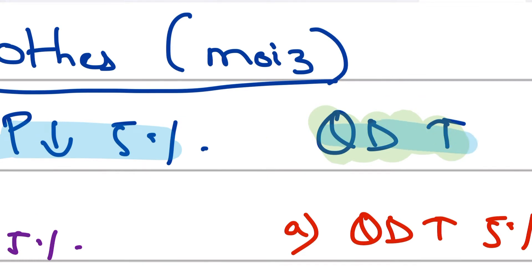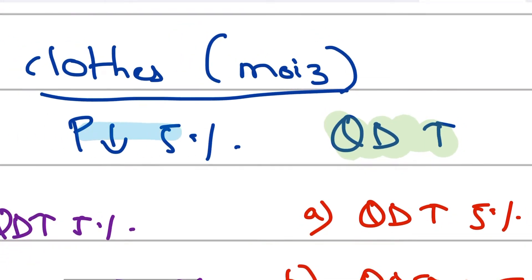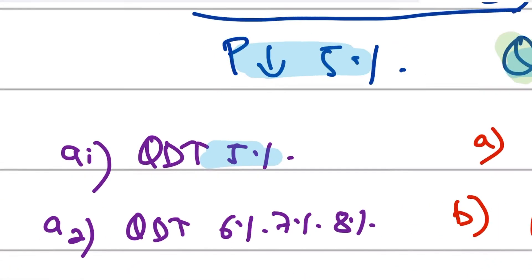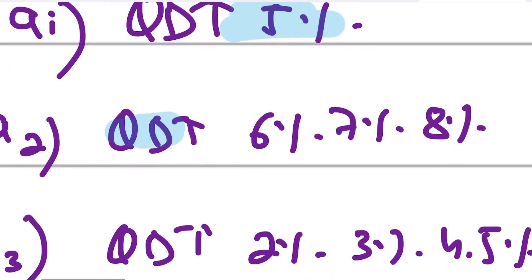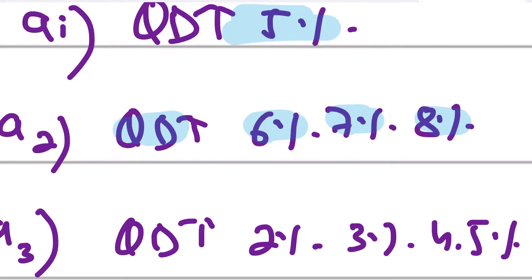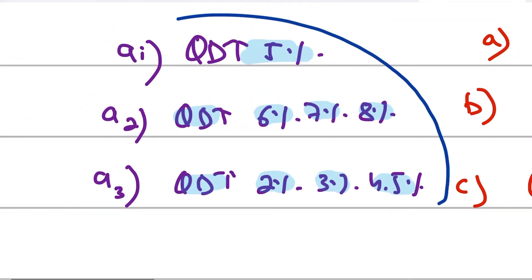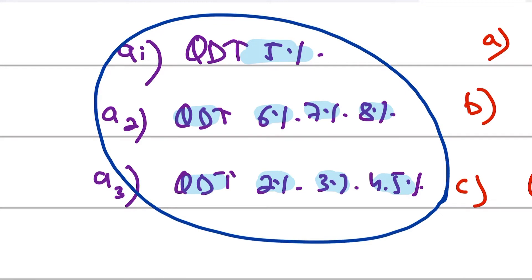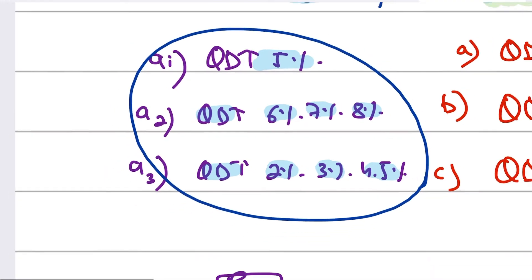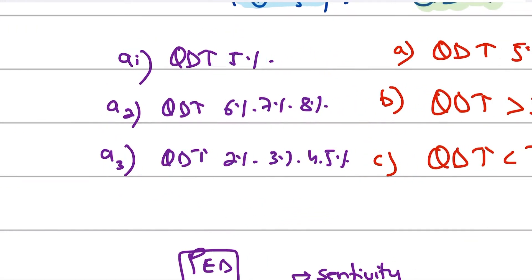Obviously, it will rise. If you are reducing the price of your product, the quantity demanded has to rise. But the question is by how much — will quantity demanded rise by 5%, more than 5% (6%, 7%, 10%), or less than 5% (2%, 3%, 4.5%)? This response in quantity demanded is what elasticity is all about. Elasticity of demand is basically measuring by how much quantity demanded will respond to a change in price.